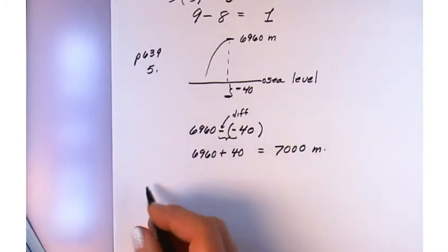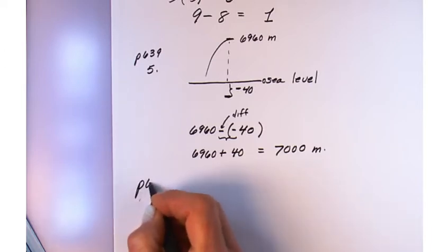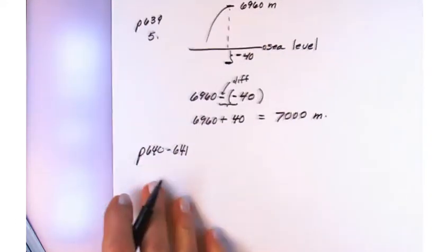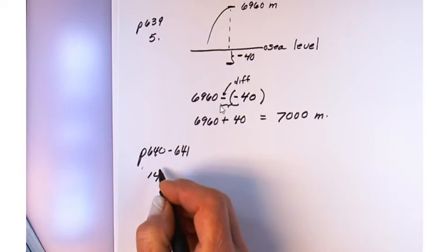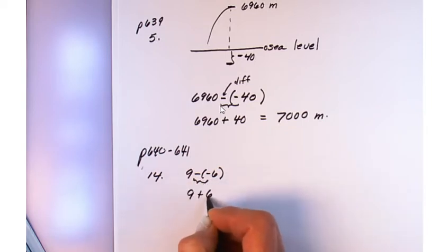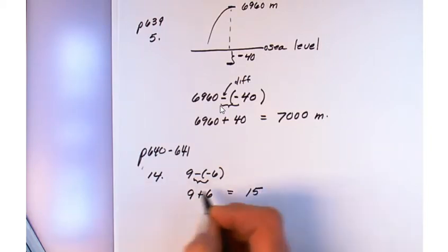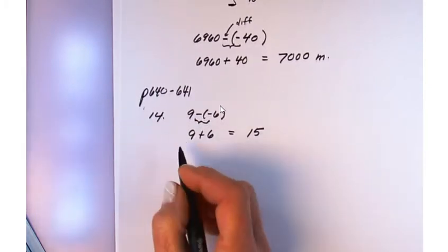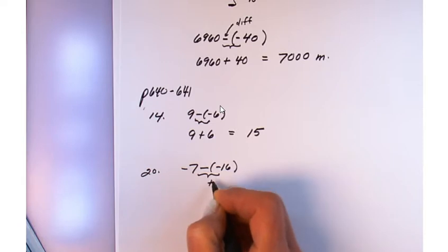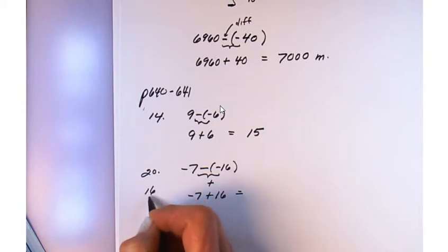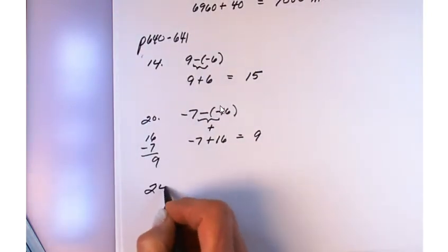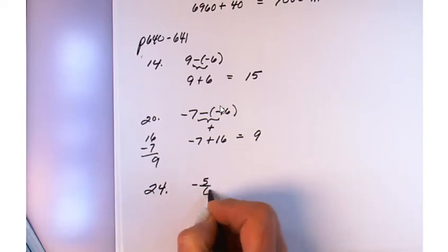Problem set pages 640–641. Number 14: 9 minus negative 6 — two consecutive negatives become positive — answer is positive 15, the easiest way to view it. Number 20: minus 7 plus 16 — write it the way you're familiar with — 9, plus 16 gives 24 minus 5.